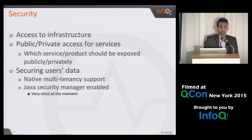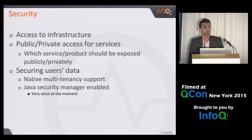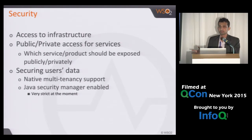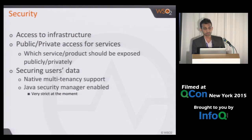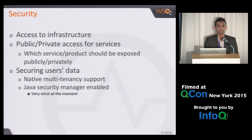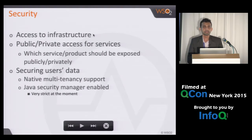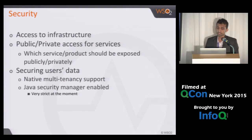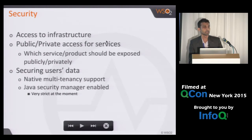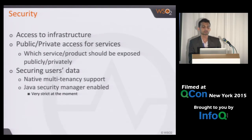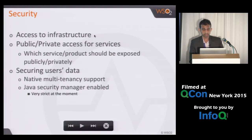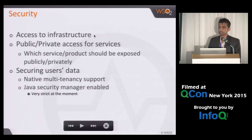Then we needed to think about security. One is the security of the infrastructure. We have a developers team and a DevOps team. Normally we give access to the DevOps team but not to the developers. That was limited using AWS features. Since our deployment is in AWS VPC, even to SSH to a machine, you have to go through an intermediate host and SSH from there. That kind of security is provided for the infrastructure.